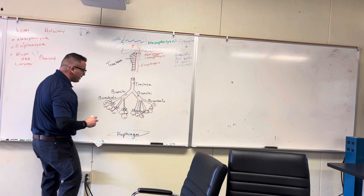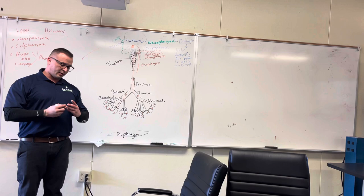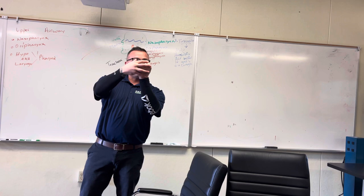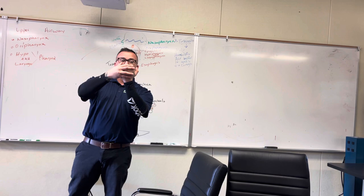Around each alveoli, there's little vessels. Imagine this is the alveoli. You have a vessel that just goes around the alveoli like this, and around those vessels there's blood.